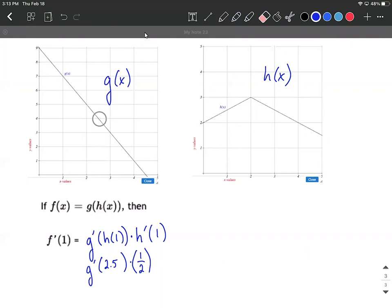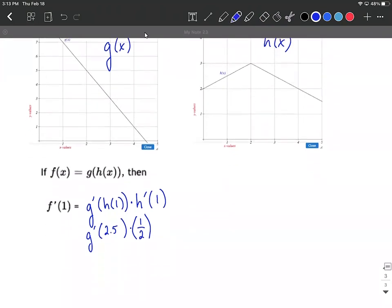So this looks like a nice straight line. If I start here, I can go down two and to the right one. Down two and right one gives us the slope. This replaces g'(2.5).